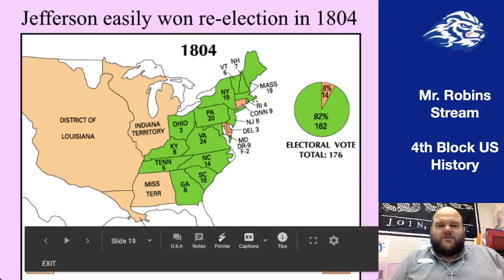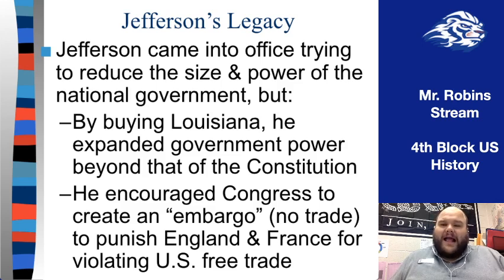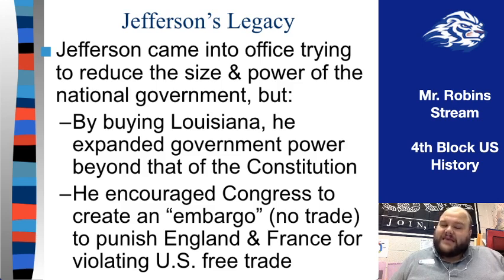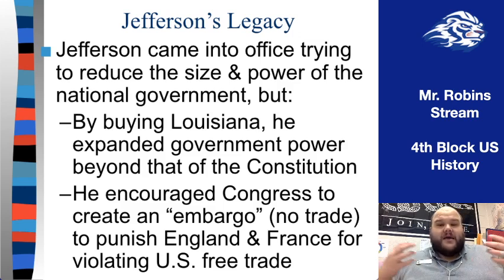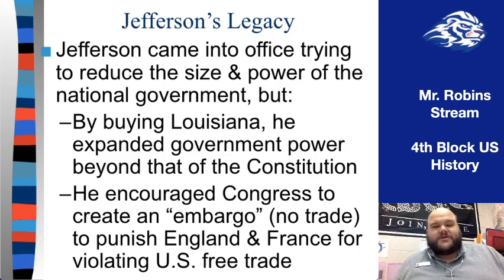In 1804, Jefferson runs for re-election and wins overwhelmingly over the Federalist candidate Charles Pinckney, easily winning the 1804 election. However, Jefferson had some issues, especially in his second term. He came into office wanting to reduce the size and power of the national government, but in his first term he had done the exact opposite with the Louisiana Purchase — expanding government power beyond the Constitution and essentially telling Congress to accept it, even though that's not how it's set up in the Constitution.